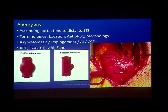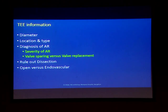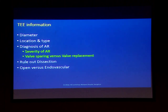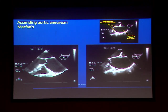Patients may be asymptomatic or may present up to CCF, and there are various modes to diagnose it. When you have a TEE, you are looking for: diameter, location, type, diagnosis of AR, rule out dissection, and open versus endovascular repair.